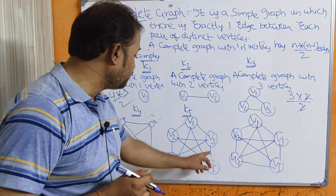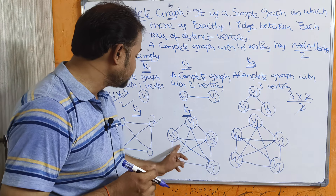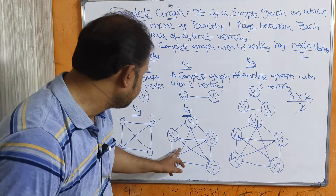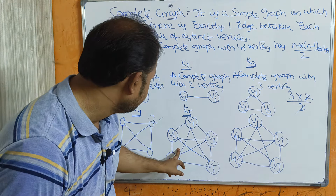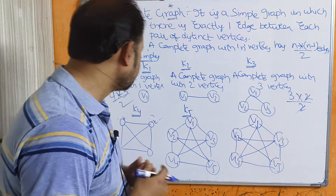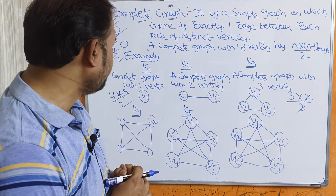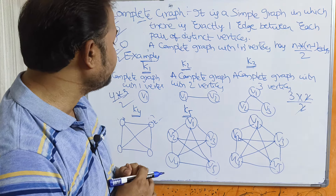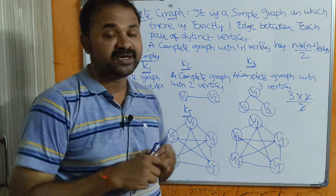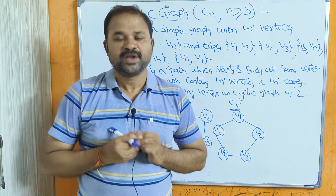Counting the edges in K5 we get 10 edges in total. This is about complete graph.